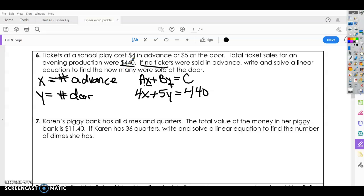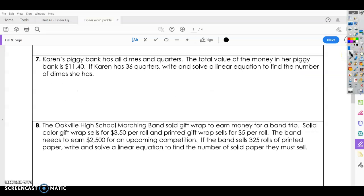Alright, now it says that no tickets were sold. Okay, no tickets means advance, means you're X. So we have no tickets that were sold early. That means all the tickets were sold at the door. So that cancels. Divide both sides by 5. And that means we sold 88 tickets at the door. Alright, so zero tickets in advance, 88 tickets at the door.